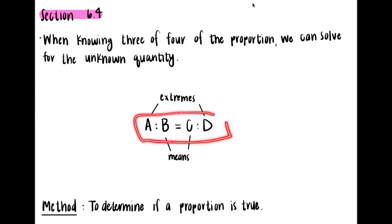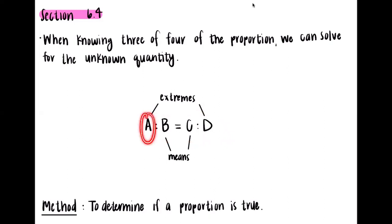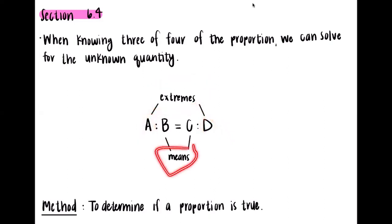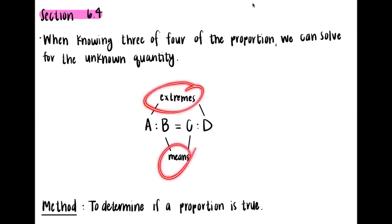If we look at this proportion — A to B is to C to D — the outside values are what we call the extremes, and the inside values are what we call the means. These names are needed for the first method we're going to talk about: using the extremes and means method.